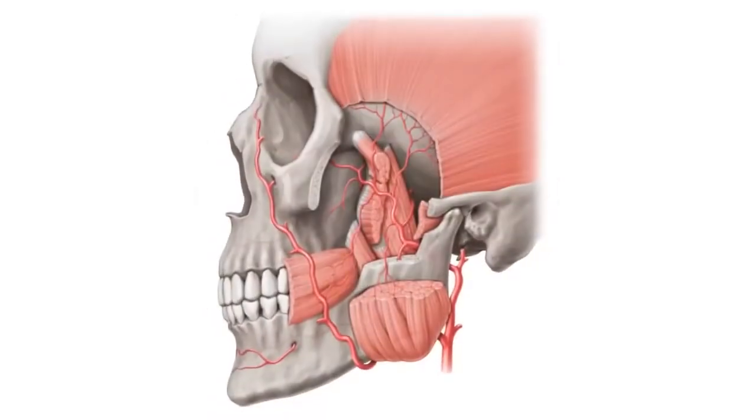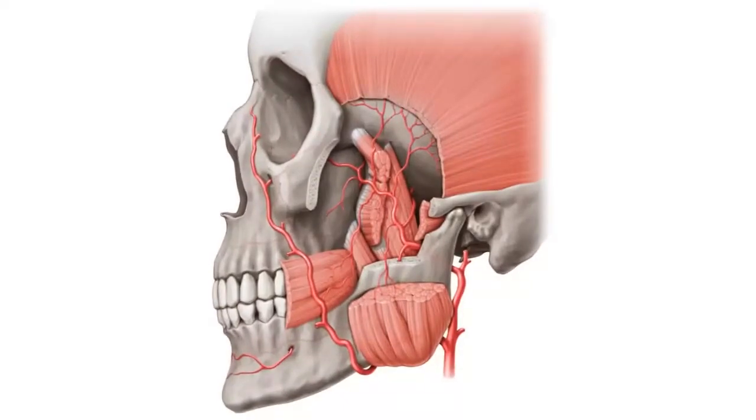Hello everyone, this is Juan from Kenhub and welcome to another anatomy tutorial where right now we're going to be talking about the maxillary artery, also sometimes pronounced as maxillary artery. Now this structure supplies the deep structures of the face and right now we're looking at it from a lateral, left lateral view. As you can see, this is going to be the maxillary artery that we're going to be talking about.